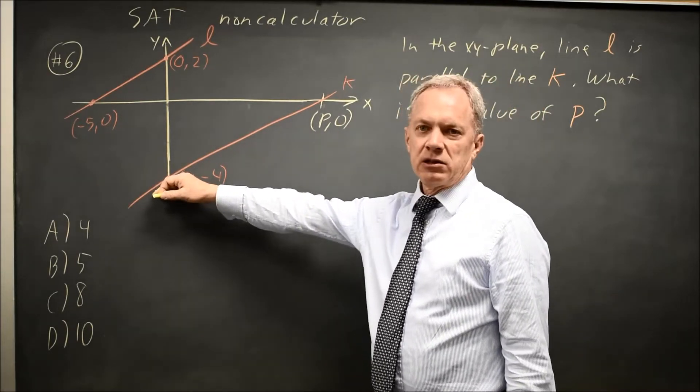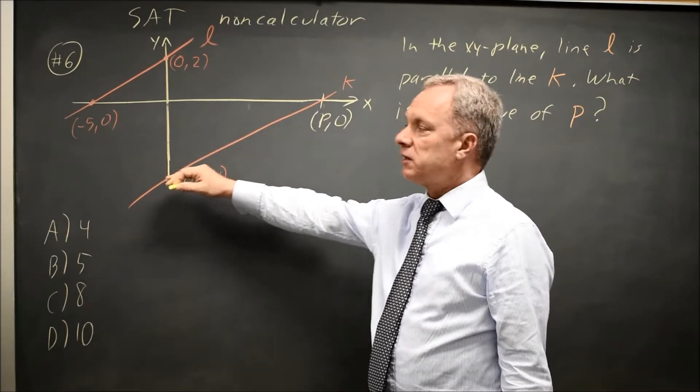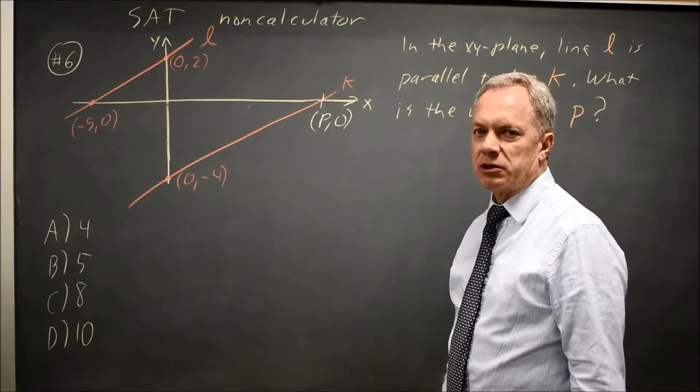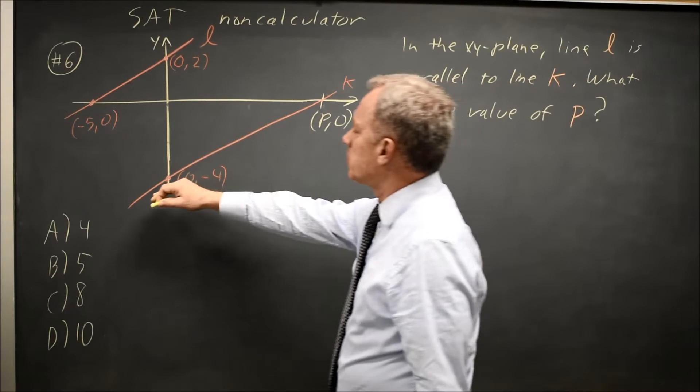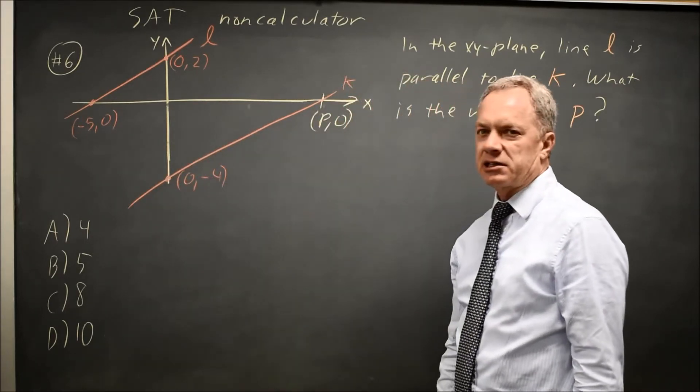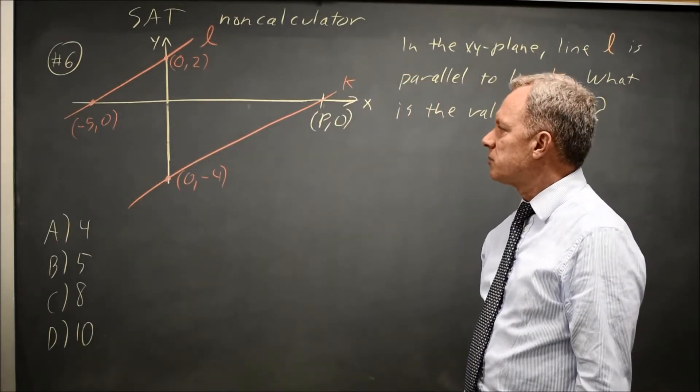They give you the actual coordinates for one point on L, and they ask you for the x-coordinate of the x-intercept for K. They give you the point (0, -4), and they ask for the x-coordinate at the x-intercept, given that these lines are parallel.